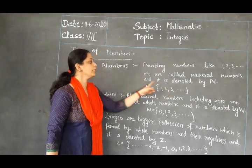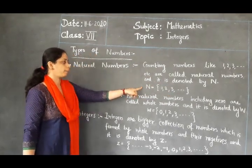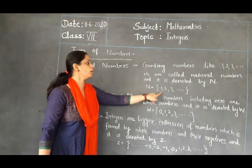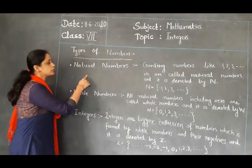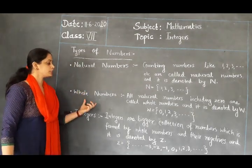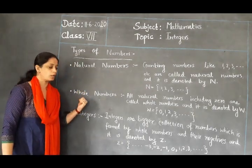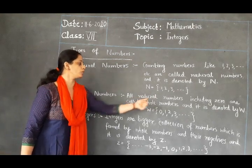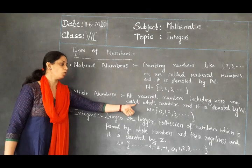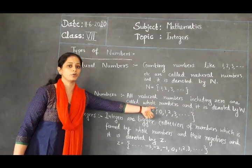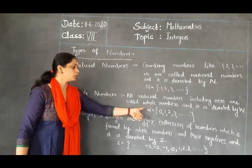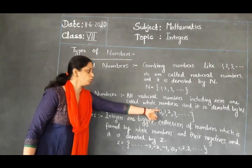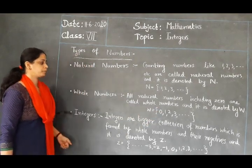Natural numbers are noted by capital N. Capital N is the set of natural numbers: 1, 2, 3, etc. The next type of numbers is whole numbers. All natural numbers including 0 are called whole numbers, and it is denoted by W. W is the set of all numbers starting from 0, 1, 2, 3, etc.